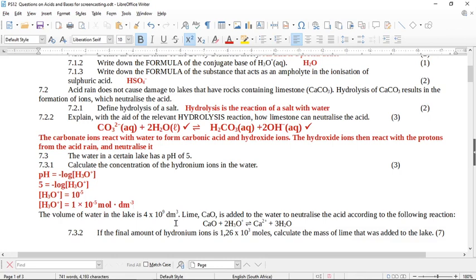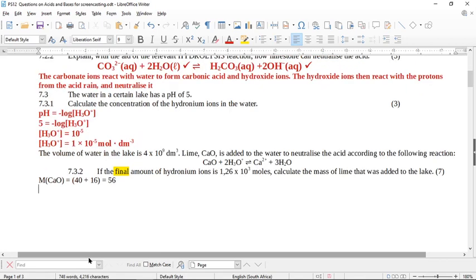The volume of the lake is 4 times 10 to the 9 cubic decimeters. Lime, calcium oxide, is added to the water to neutralize the acid according to the following reaction. Calcium oxide plus two protons goes to calcium ions and three water. If the final amount of hydronium ions is 1.6 times 10 to the 3 moles, calculate the mass of lime that was added to the lake. So if we're going to need the mass, we're going to need the relative molecular mass of lime. So calcium is 40, oxygen is 16. So this is going to be 56.